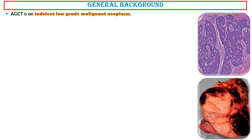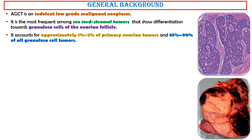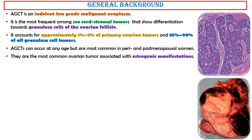General background. Adult granulosa cell tumor is an indolent, low-grade malignant neoplasm. It is the most frequent among sex cord-stromal tumors that show differentiation towards granulosa cells of the ovarian follicle. It accounts for approximately 1% to 2% of primary ovarian tumors, and 85% to 90% of all granulosa cell tumors. Adult granulosa cell tumors can occur at any age, but are most common in peri- and postmenopausal women. They are the most common ovarian tumors associated with steroidogenic manifestations.